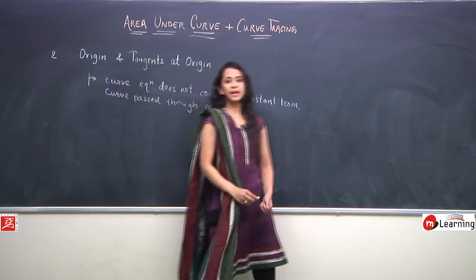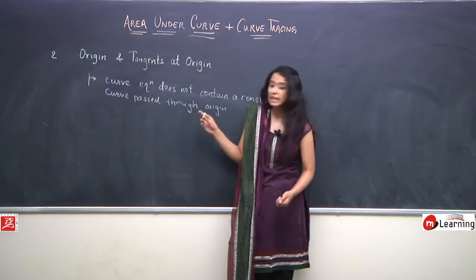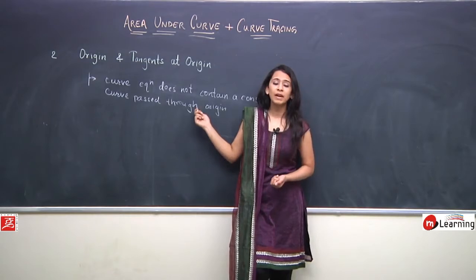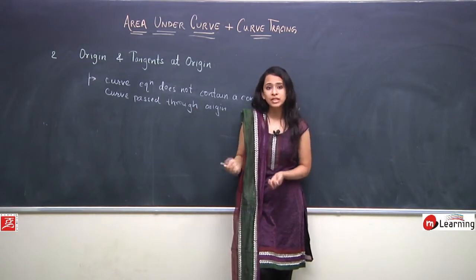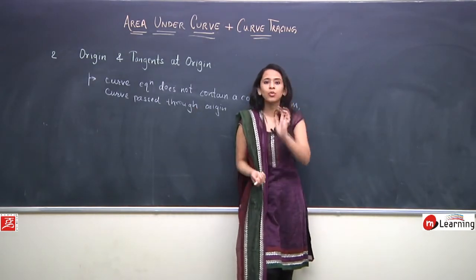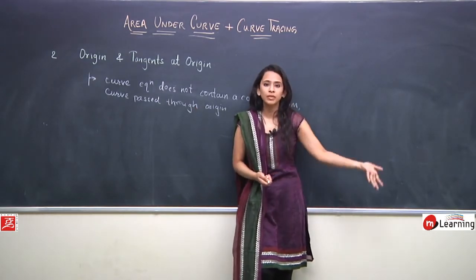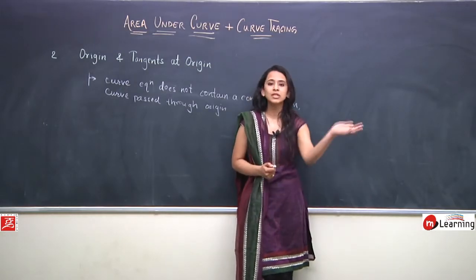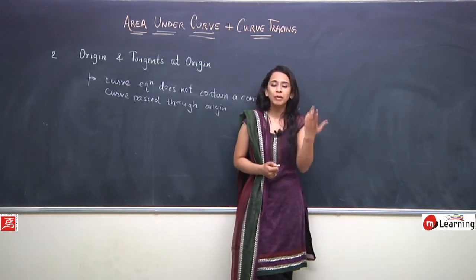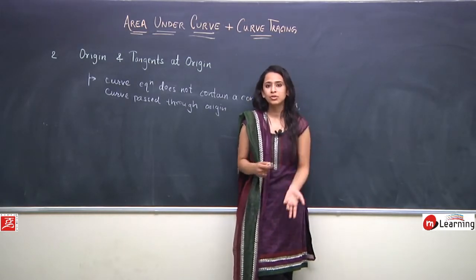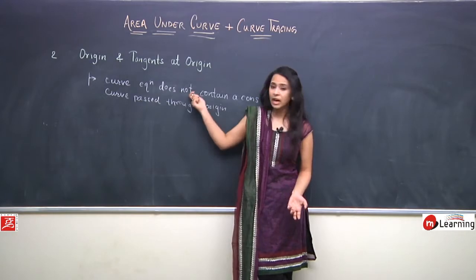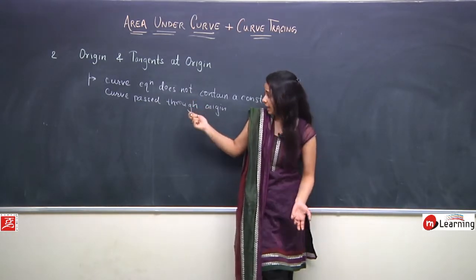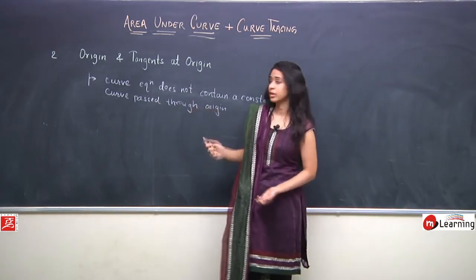If there is no constant term in the curve's equation, then all terms contain x or y, and putting them all equal to 0 gives 0. So if the curve's equation has no constant term, then the curve passes through origin.